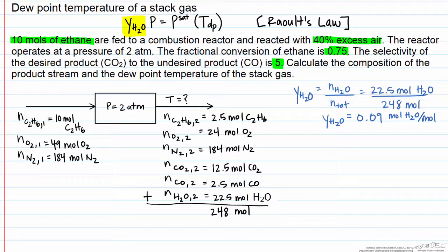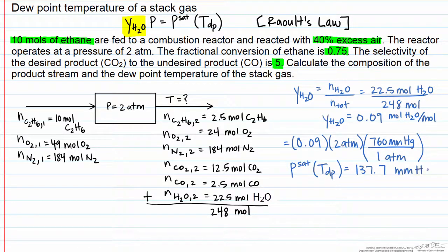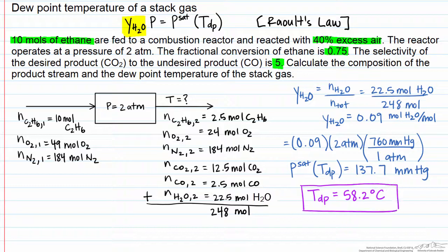Now we can find the partial pressure of water. Y_H2O times our pressure equals 0.09 times 2 atmospheres, times 760 mmHg per atmosphere, because the saturation pressure tables are generally given in mmHg. This equals 137.7 mmHg. When we go to a table of vapor pressures of water as a function of temperature and look up this saturation pressure, we find that the dew point temperature is equal to 58.2 degrees Celsius.